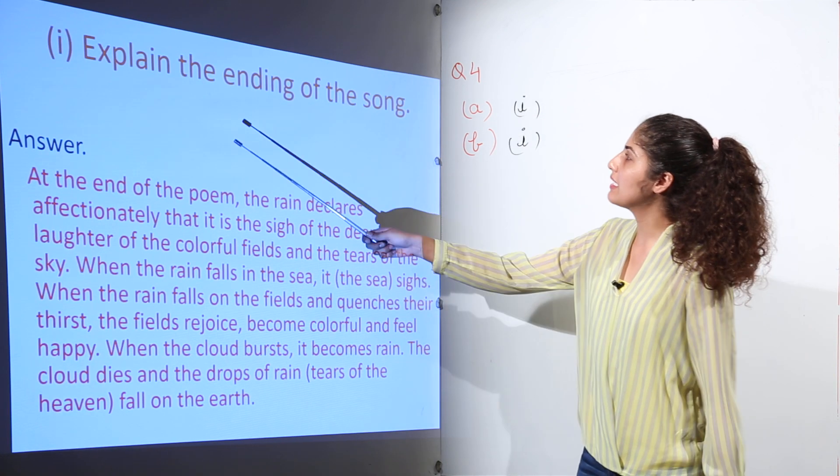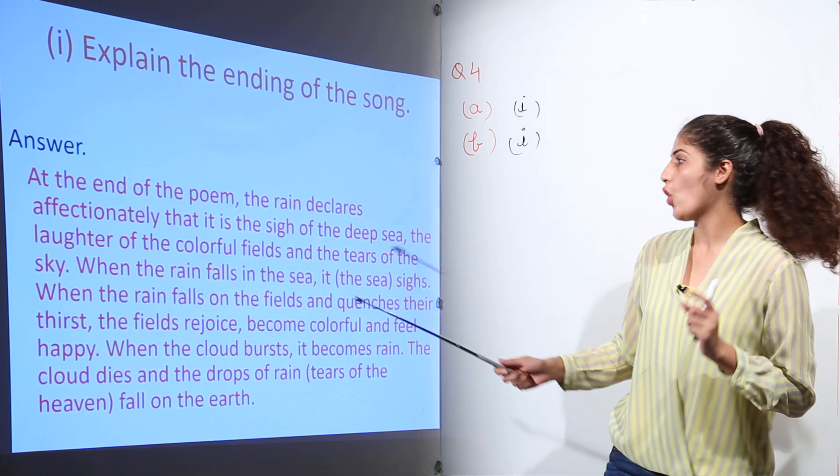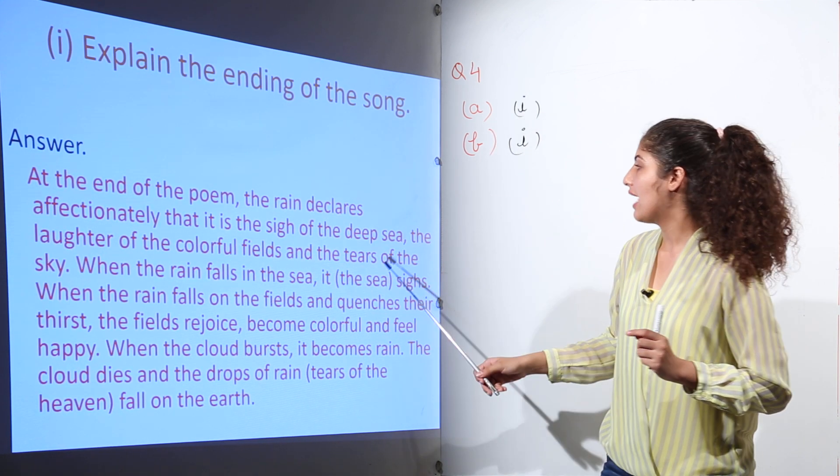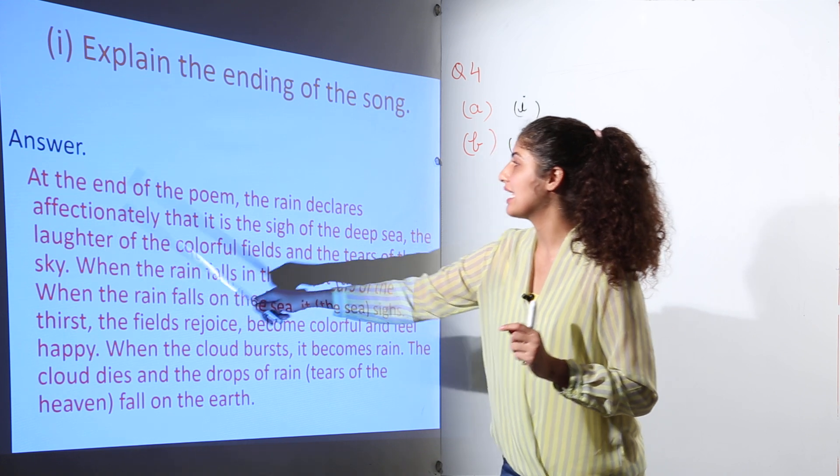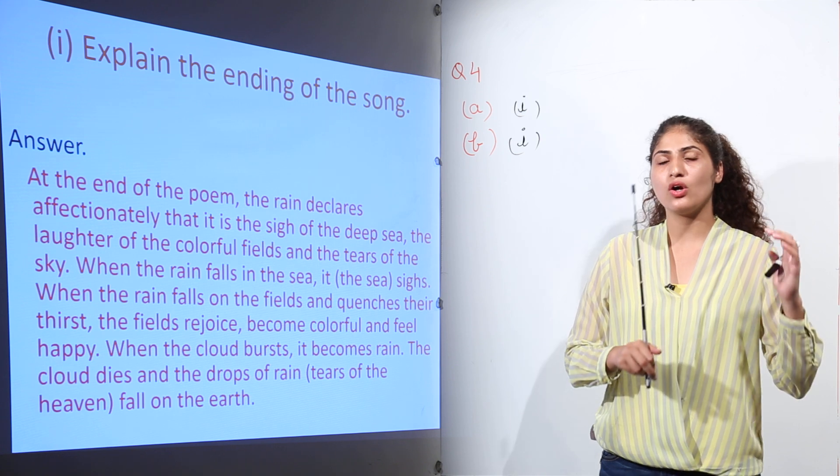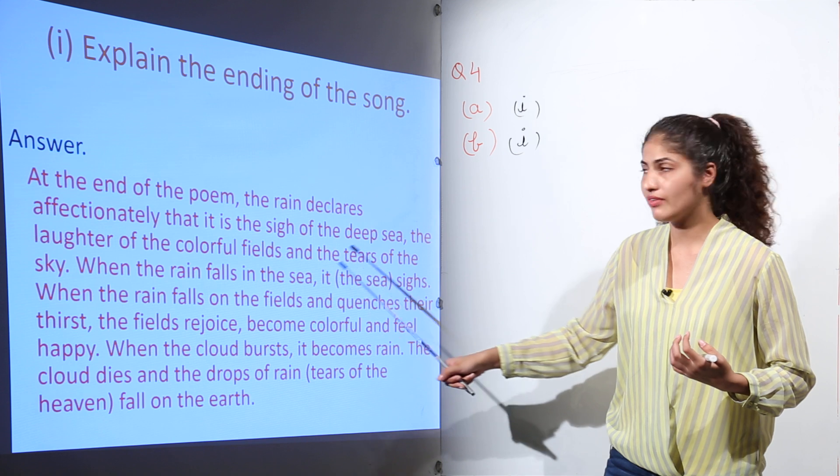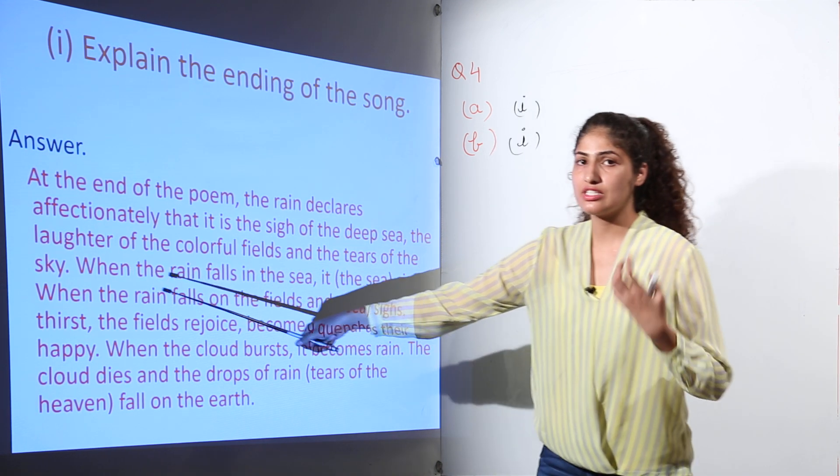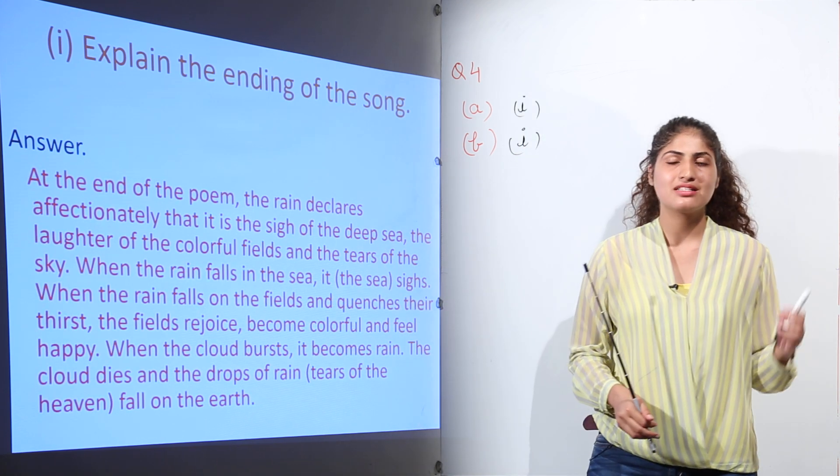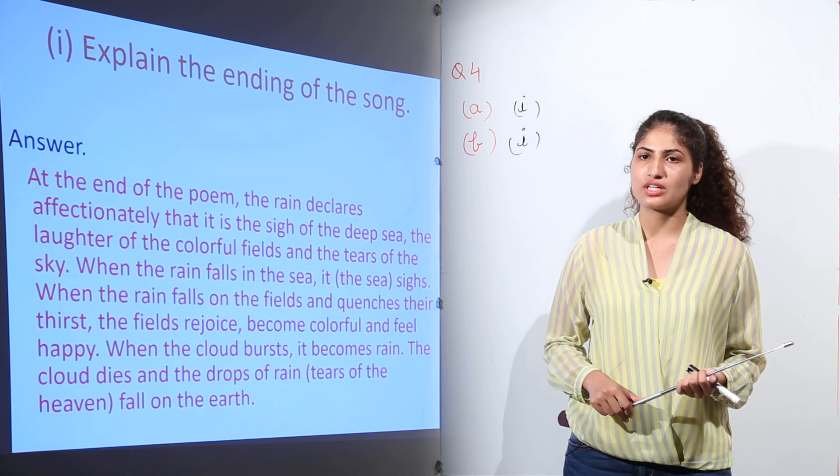Next question: Explain the ending of the song. In the end the poet has used the words like sigh of the sea, the laughter of the colorful fields, and the tears of the sky. It is now signing of the letter with love. It not only offers the love, but it is also giving the reference of the birth of the rain, the happiness of the field which occurs due to the rain, and the tears of the sky. That means the rain is a result of the tears of the God sitting in the heaven. I hope this question is clear.